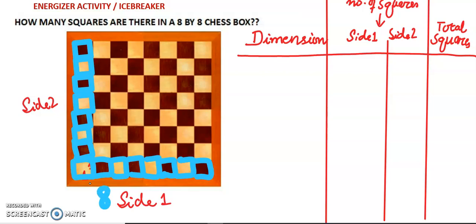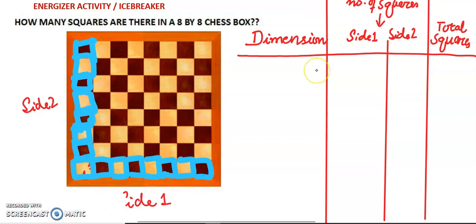And along side 2 there are 1, 2, 3, 4, 5, 6, 7, 8 — also 8 squares. So in total we have 8 by 8 equal to 64 squares in this chess box, as can be seen right now. I have made a table on the right-hand side in which we will write the dimensions, the number of squares along side 1 and side 2, and hence the total squares. The dimension is 1 by 1, side 1 has 8 squares and side 2 has 8 squares, so 8 by 8 gives us 64 squares.